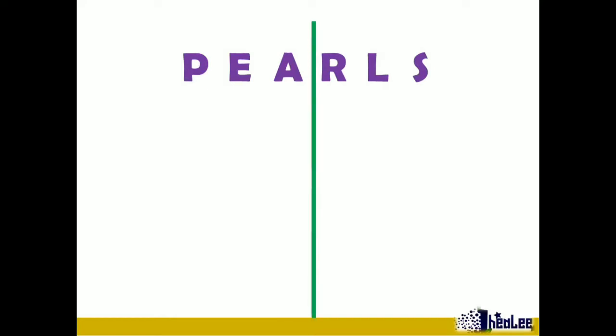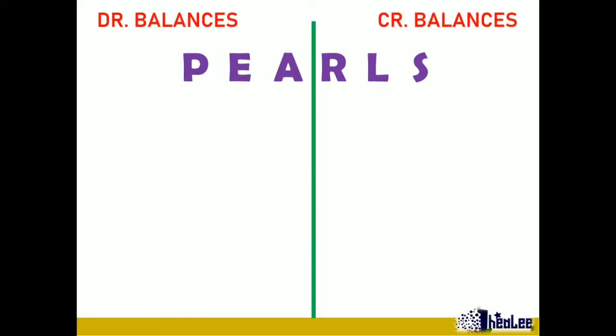On your screen, you're seeing the word PEARLS. We're going to split that into two. When you divide it into two, notice you have a left side and a right side. So the left side is our debit side, which are our debit balances, and the right side is our credit side, which are our credit balances.